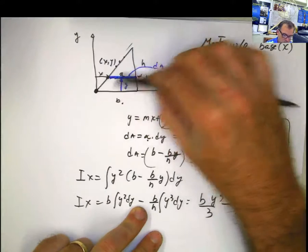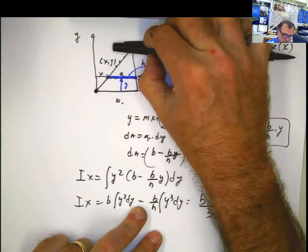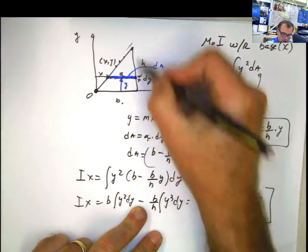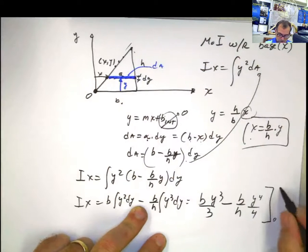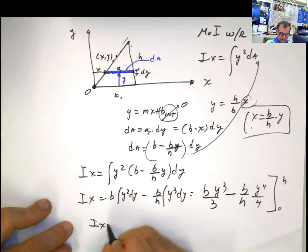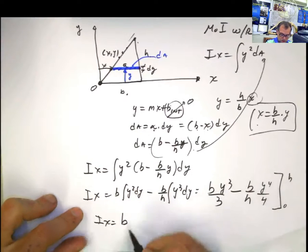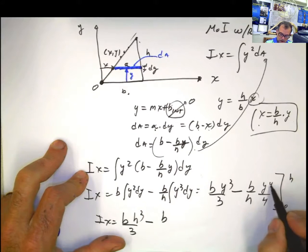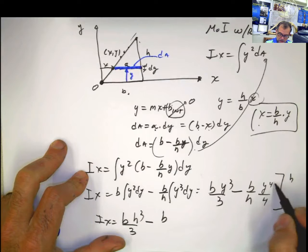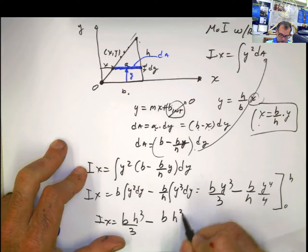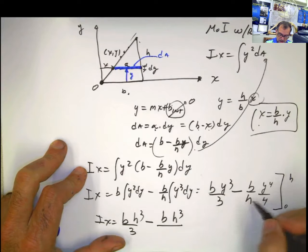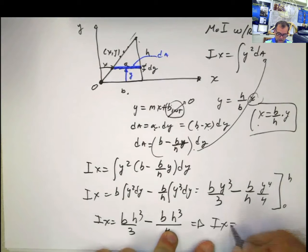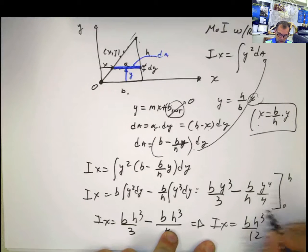We're sweeping the whole section from here to there. This point is 0 and the height is h, from 0 to h. My i sub x equals bh cubed divided by 3 minus b times h to the fourth with h canceling out, h cubed in the top divided by 4. This is bh cubed divided by 12.